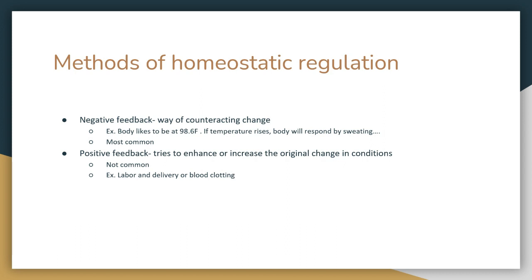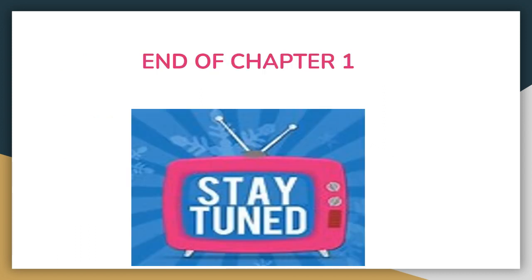Positive feedback is another way the body maintains homeostasis. It tries to enhance or increase the original change in conditions. It's not common, and examples include blood clotting and labor and delivery. That is the end of Chapter 1. We're going to go on to Chapter 2 — let me know if you have any questions.